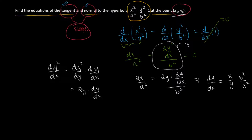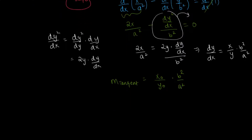To evaluate the slope at the specific point (x₀, y₀), the slope of the tangent becomes x₀ divided by y₀ times b squared over a squared. For the normal slope at the same point, since the tangent and normal are perpendicular, the normal slope is negative one divided by the tangent slope, giving negative y₀ over x₀ times a squared over b squared.